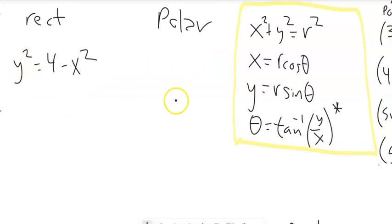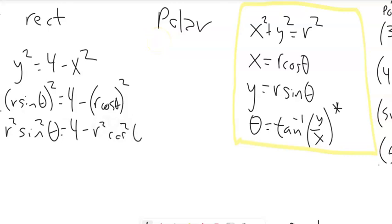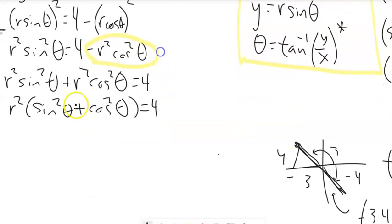To confirm via substitution: y = r·sin(θ) and x = r·cos(θ), so y² = r²·sin²(θ) and x² = r²·cos²(θ). Moving terms: r²·sin²(θ) + r²·cos²(θ) = 4. Factoring: r²(sin²θ + cos²θ) = 4. Since sin²θ + cos²θ = 1, we get r² = 4, so r = 2. A bit more work, but the same answer.